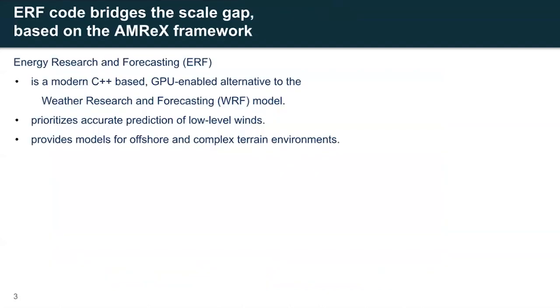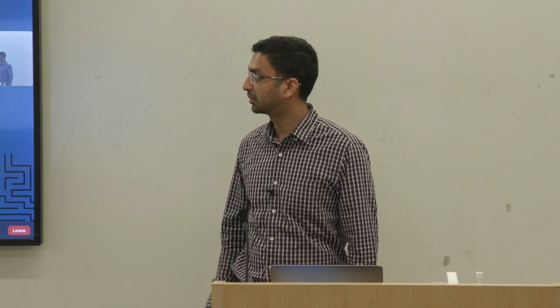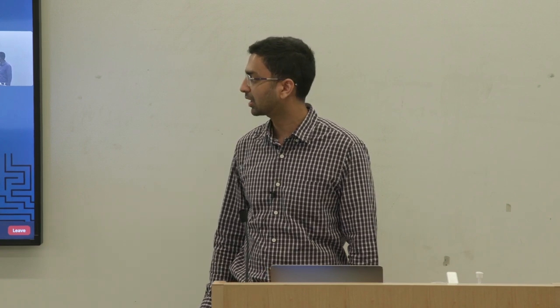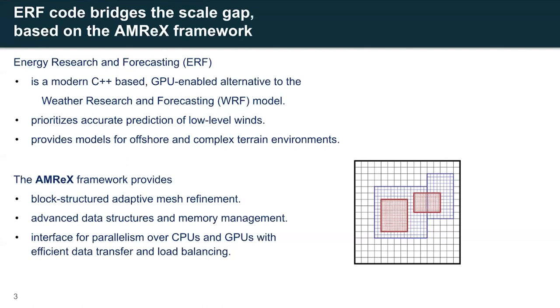The code Energy Research and Forecasting, or ERF — we call it IRF — bridges this scale gap and is the GPU-enabled alternative to the WRF code. It prioritizes low-level winds that are consequential for turbine performance and also has models for complex terrain or offshore environments. Programmatically, the IRF code is built upon the AMREX framework, which provides the infrastructure for block-structured adaptive mesh simulations and also has the interface for parallelism over CPUs and GPUs.